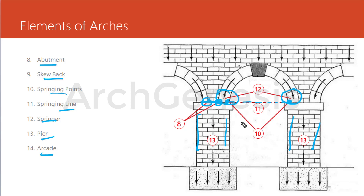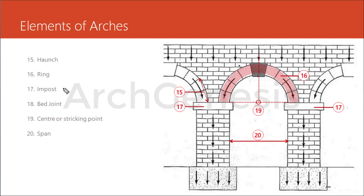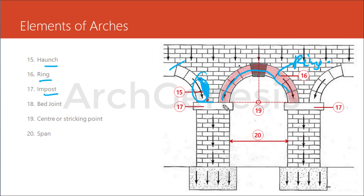Arcade is a row of arches in continuation — one arch followed by another. Haunch is the lower half of the arch between the crown and the skewback. Ring is the circular course forming an arch — this highlighted area is called the ring. Impost is the projecting course at the upper part of a pier or abutment to carry the springing line. Bed joint refers to the joints between the voussoirs which radiate from the center.